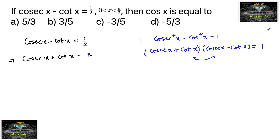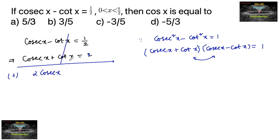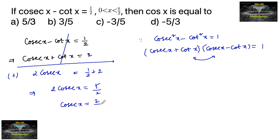So cosecant x plus cot x equals 1/(1/2) = 2. Now adding both equations, cot x cancels and we get 2·cosecant x = 1/2 + 2 = 5/2, which implies cosecant x equals 5/4.